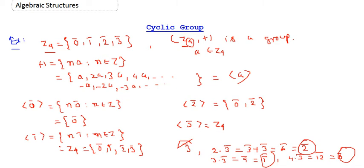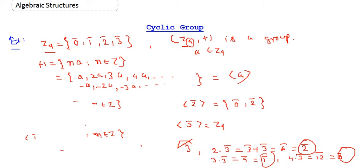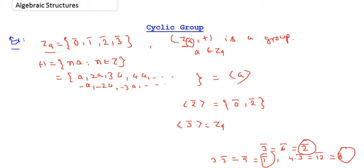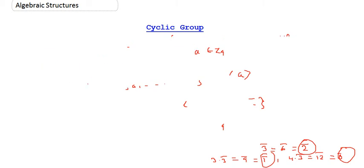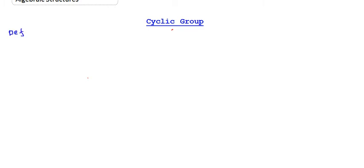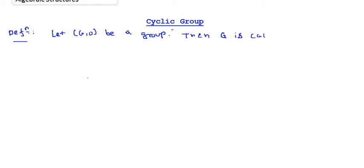Now let's introduce the concept of a cyclic group. Instead of just cyclic subgroups, we are now defining when the whole group is cyclic. Here is the definition: let G with a composition be a group.